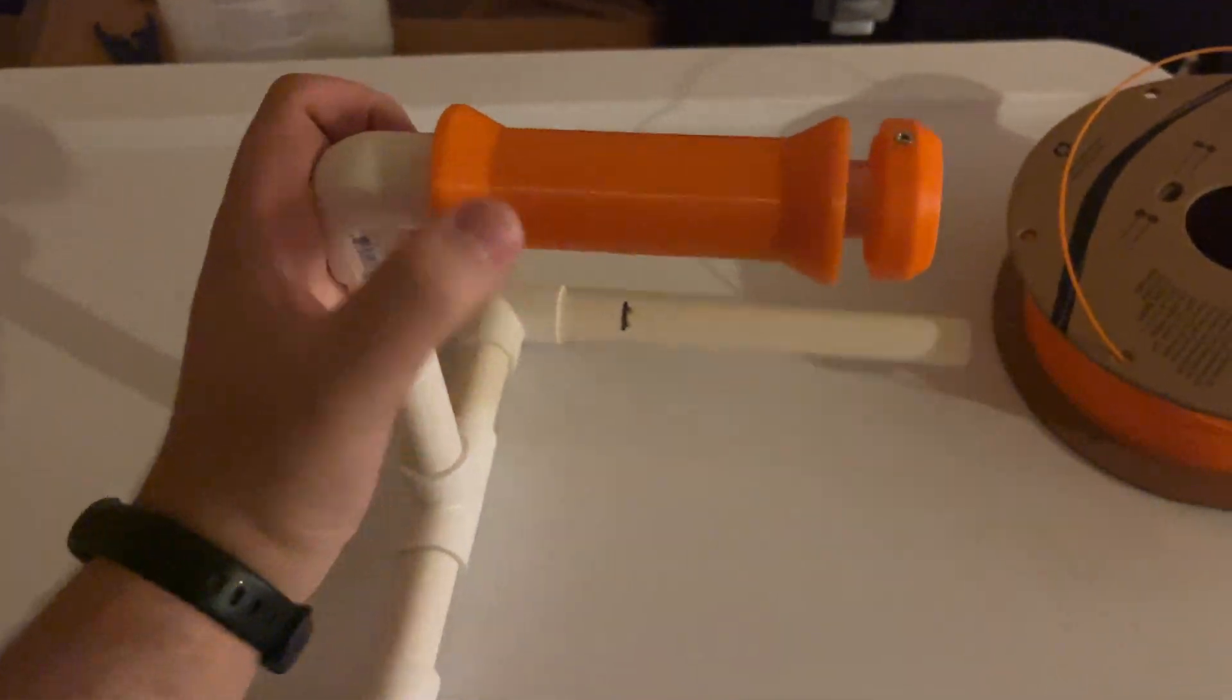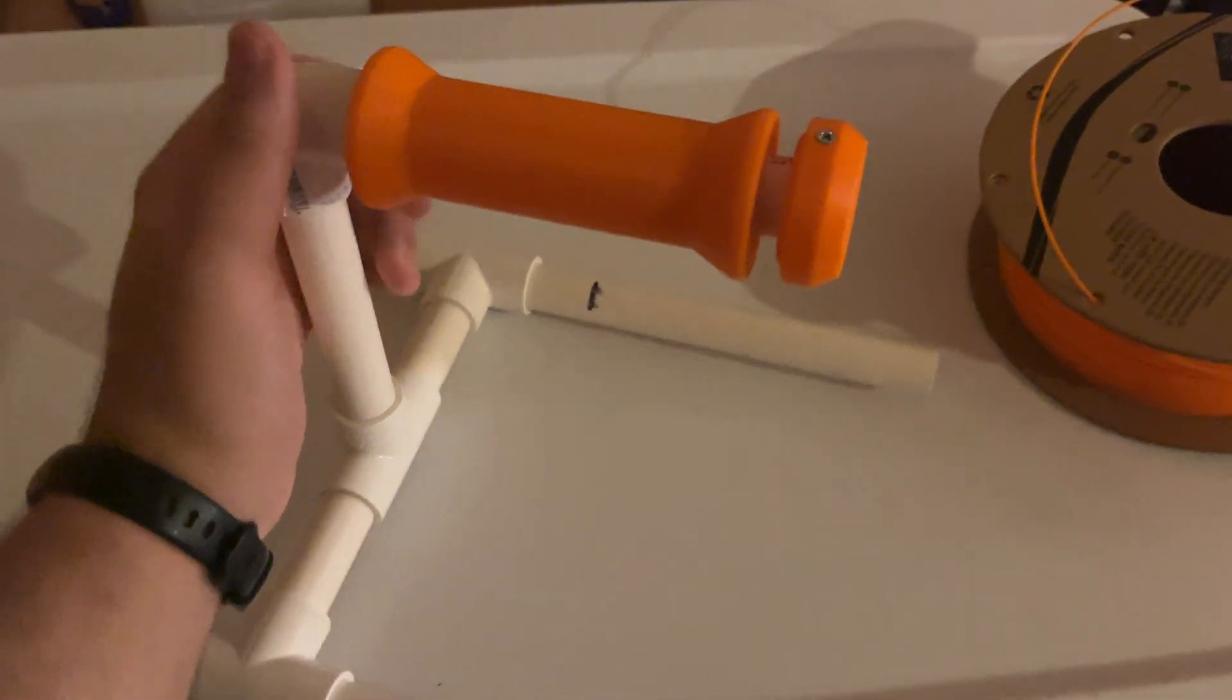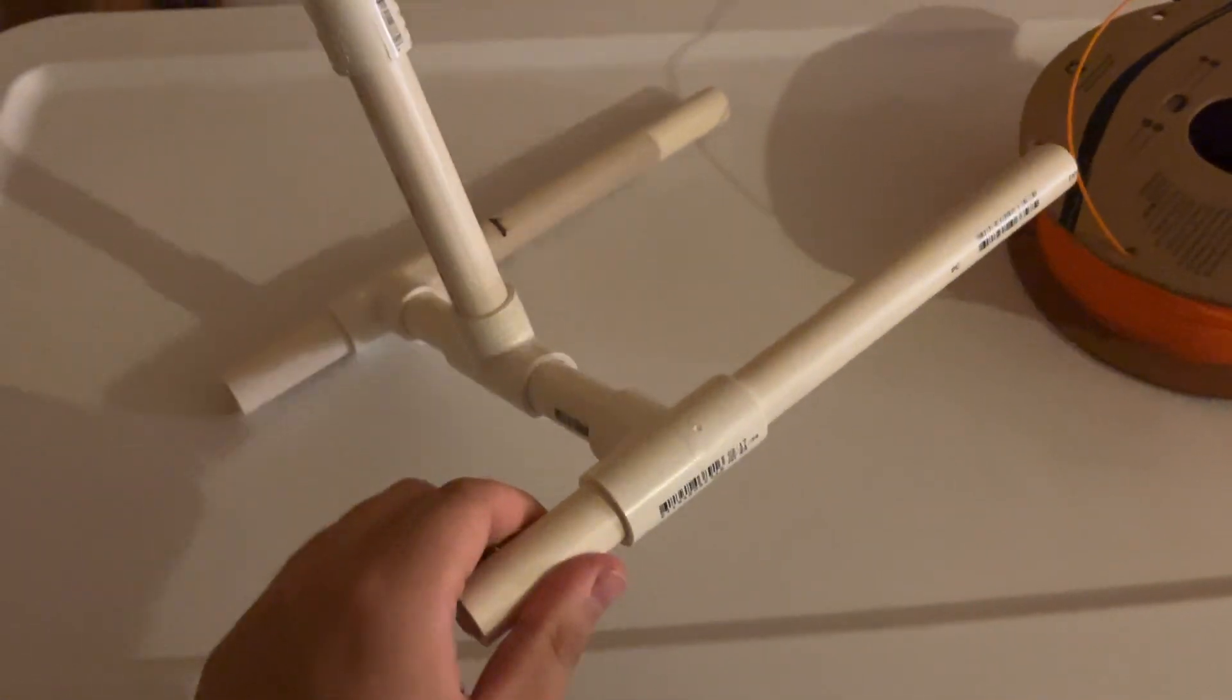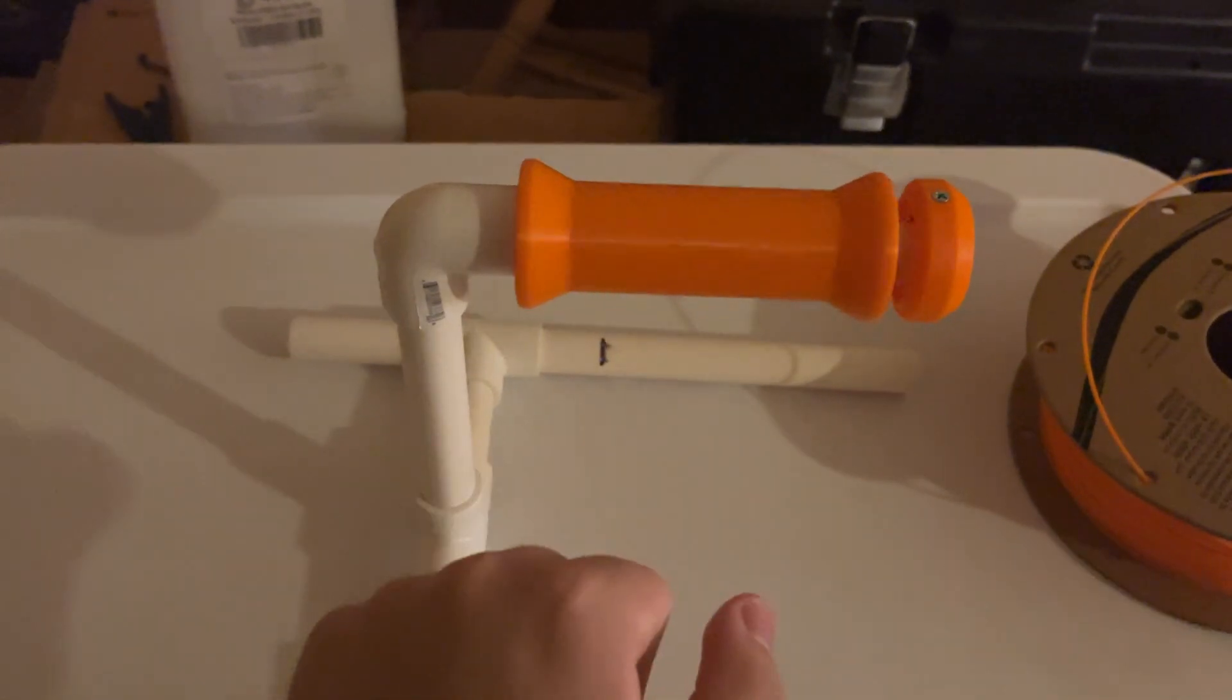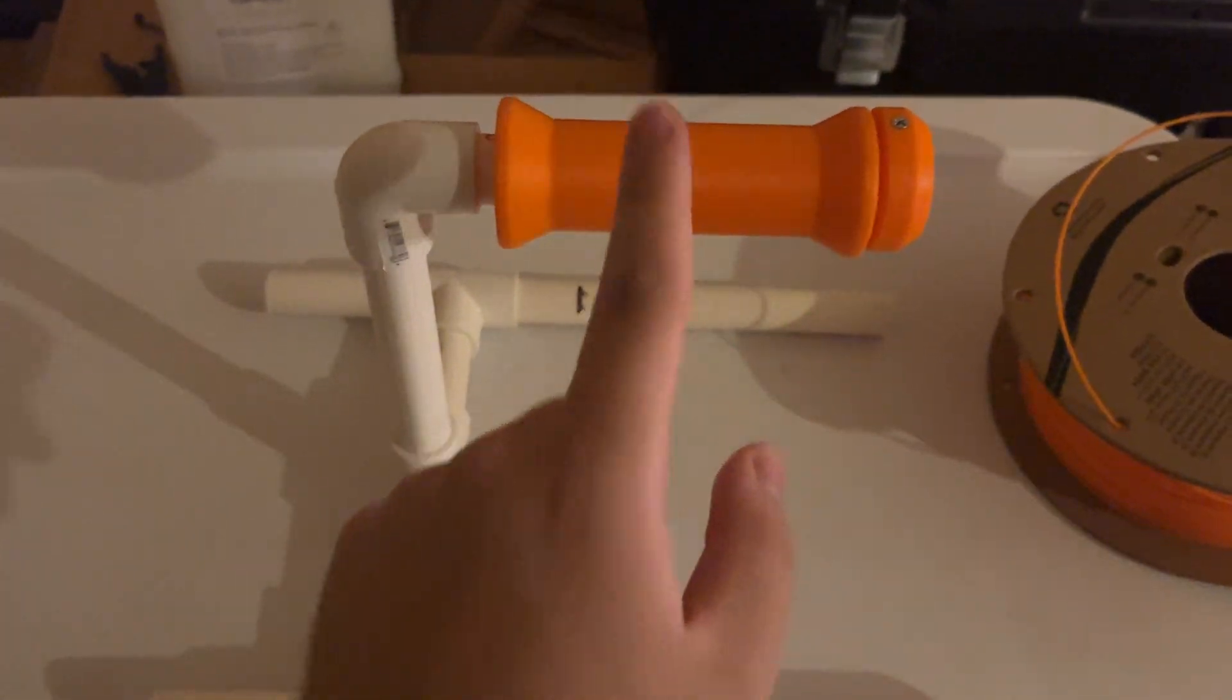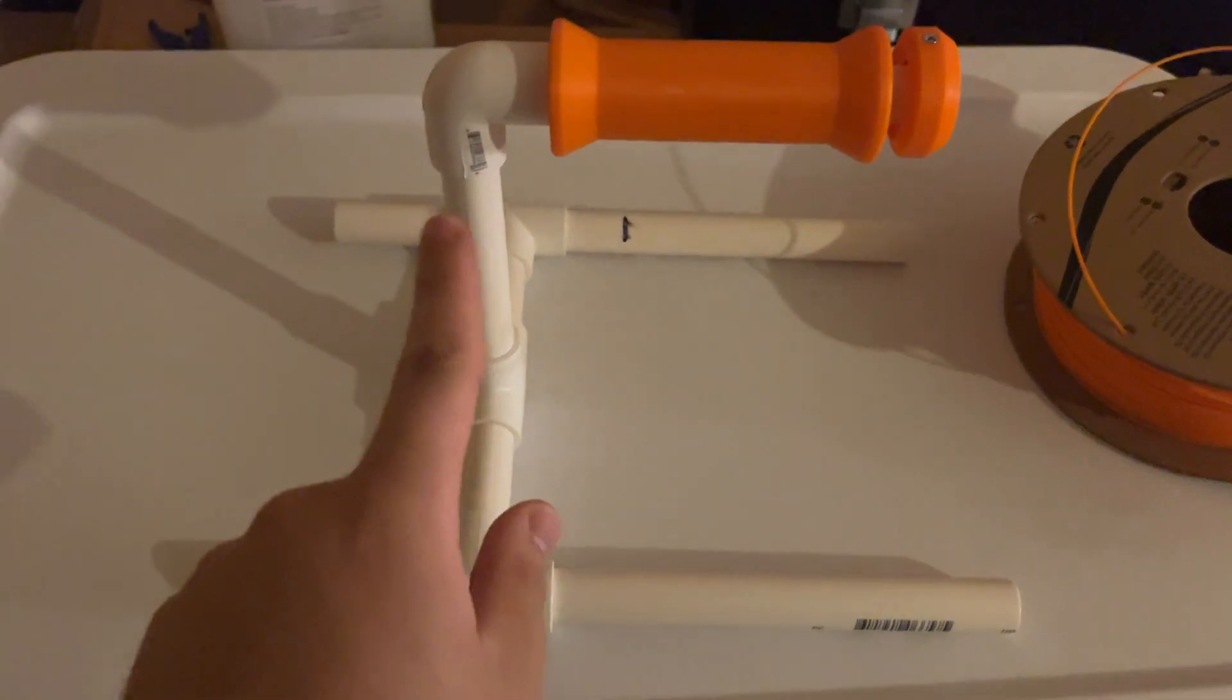These two prints are the only two printed bits. So this is half inch schedule 40 PVC and I've uploaded the files for these two bits along with instructions on how to make this.